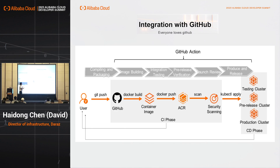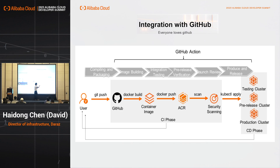We are a GitHub fanatic company and everybody loves the Git environment. This is how we work: we use GitHub with Git Actions, push to a container image on Alibaba Container Registry (ACR). ACR scans the image to make sure it's secure, and then we deploy to ACK via ACK One.